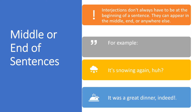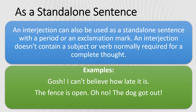Interjections don't always have to be at the beginning of a sentence — they can appear in the middle, end, or anywhere else. For example: "It's snowing again. Ha!" An interjection can also be used as a stand-alone sentence, with a period or exclamation mark. An interjection does not contain a subject or verb normally required for a complete thought.